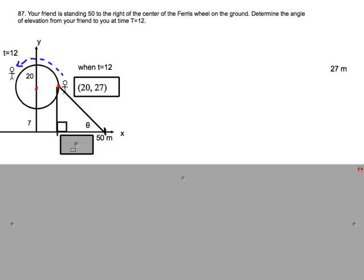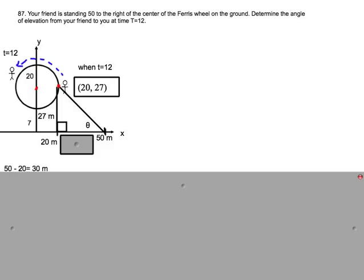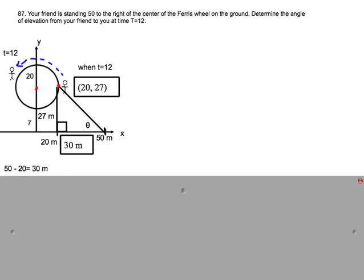In order to find the angle of elevation you need to take the base of the triangle which is 50 meters minus the 20 meters from the radius that we get from the Ferris wheel, which tells us that the base of the triangle is 30 meters long.